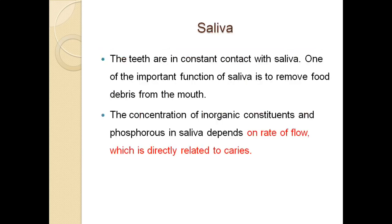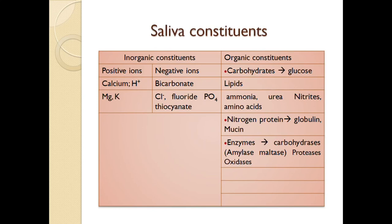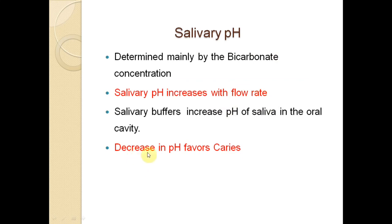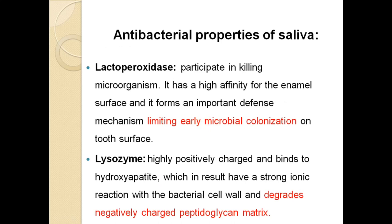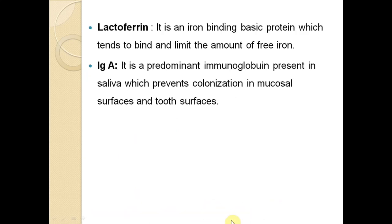Saliva is directly connected to caries regarding flow rate. Good flow means less caries; reduced flow means more caries. pH increases with flow rate — decreased pH means more caries, increased pH means less caries. Thick mucinous saliva is associated with high caries incidence. Reduced saliva production, as in xerostomia, leads to more caries. Antibacterial properties in saliva include lactoperoxidase, which limits early microbial colonization; lysozyme, which degrades peptidoglycan matrix; iron-binding proteins that limit free iron; and secretory IgA, an immunoglobulin that prevents bacterial colonization.